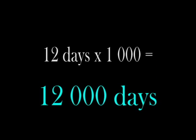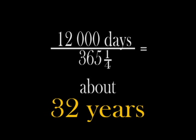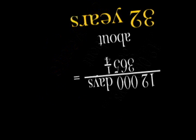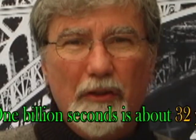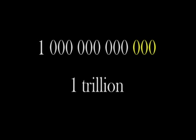So how much is a billion seconds? One billion seconds is 12,000 days. How many years is 12,000 days? That's about 32 years. So one billion seconds is 32 years. And a trillion — that's one billion times a thousand — so one trillion seconds is around 32,000 years.